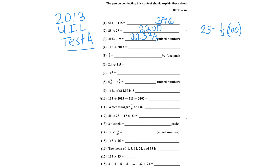For number 4, I'm going to add 115 plus 2013. I look at 15 plus 13 is 28, and then 100 plus 2000 is 2100. So that's 2128. For number 5, 3 fifths as a decimal is 0.6, or 60%.